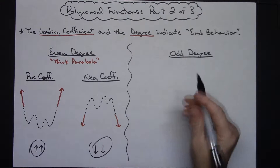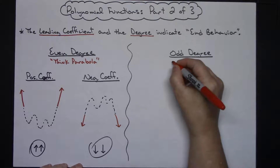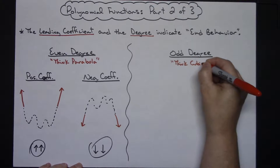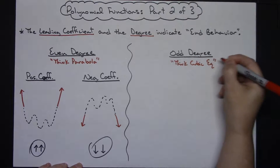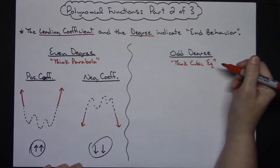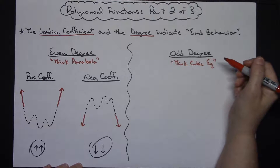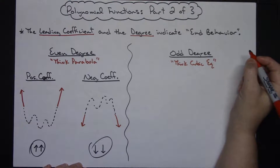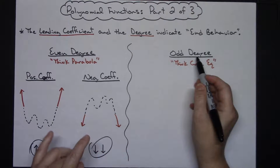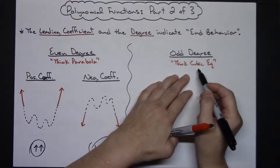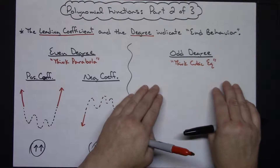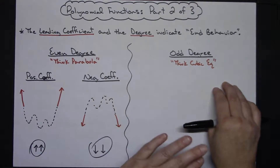For the odd degree, I like to tell students to think about your cubic equation. All my students memorize the basic shapes and family of functions, and x to the third is one we memorize. If it's an odd degree, it's always going to look like your basic cubic equation with some hills and valleys. Again, you're going to have two categories because the leading coefficient is either going to be positive or negative.